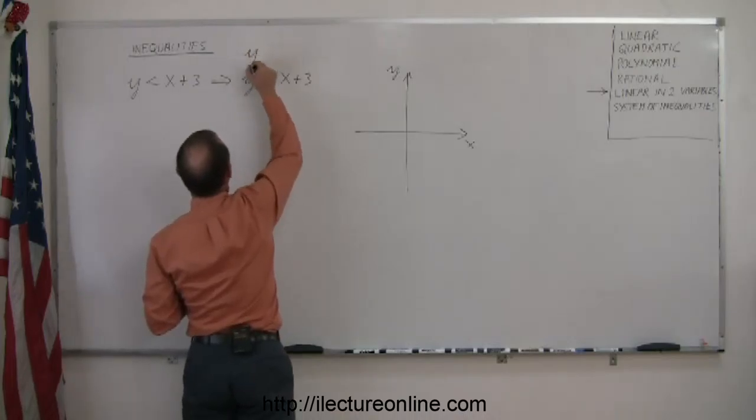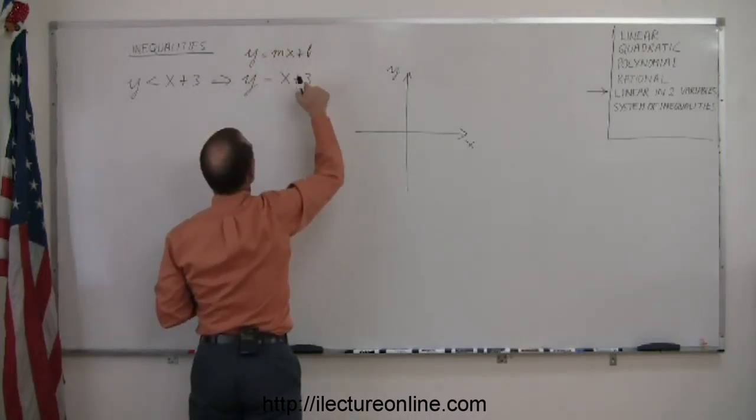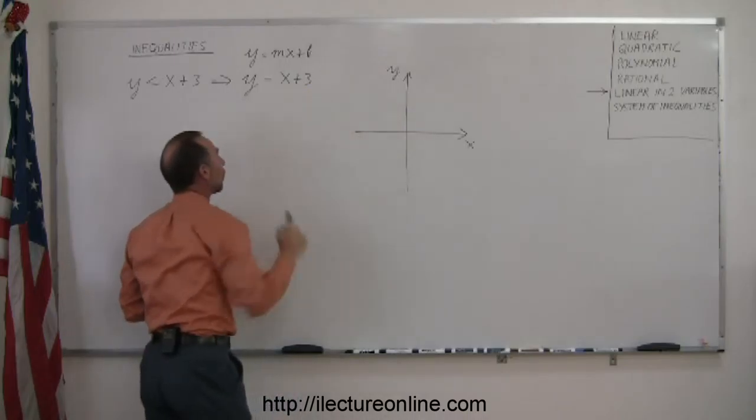Remember, this is an equation in the form of y equals mx plus b. In this case, b, the intercept, is 3, and the slope is 1.